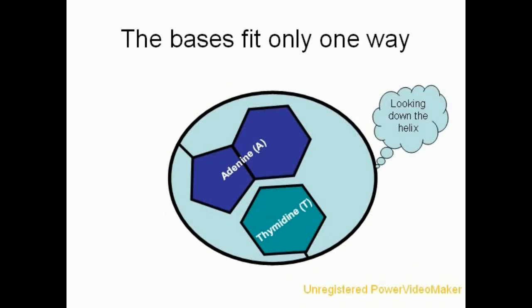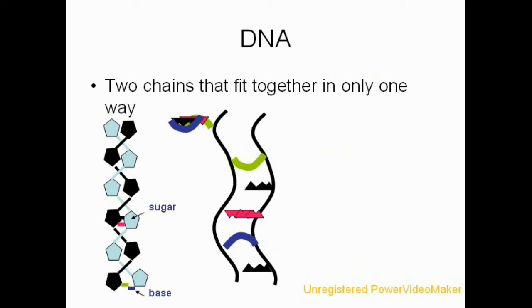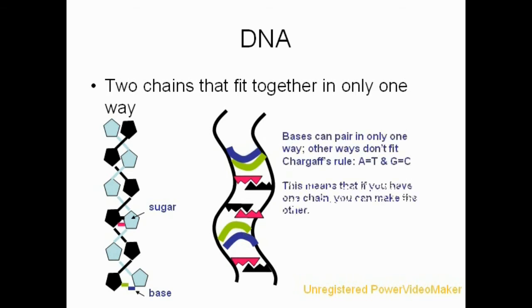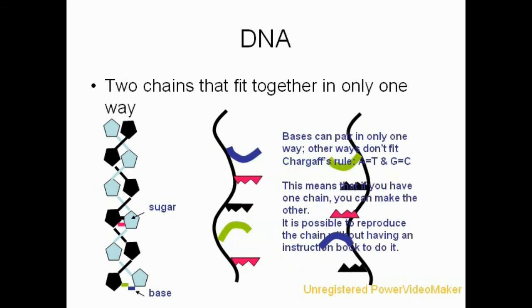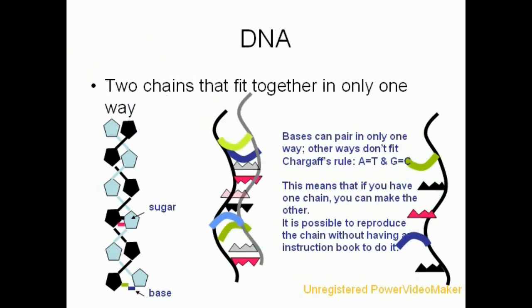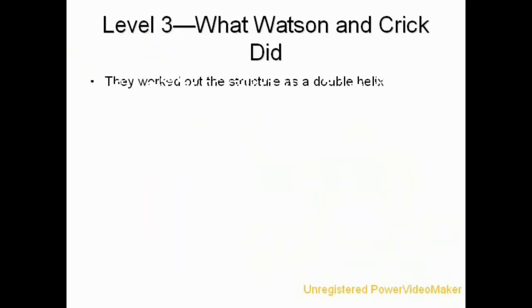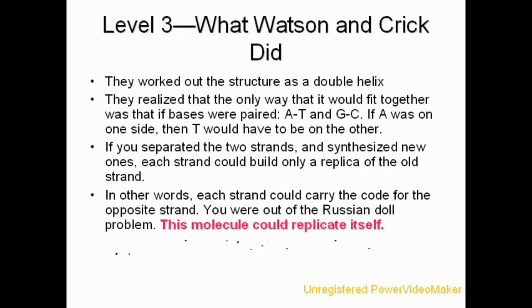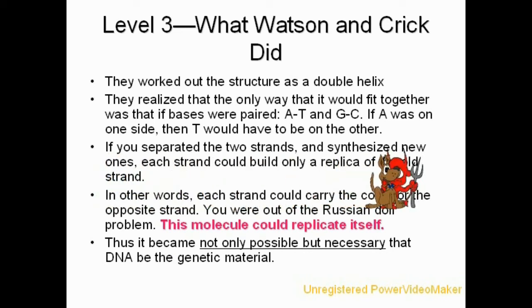If the bases fit together in only one way, then what it meant was that if you knew what one chain was, you would know what the other one was. And furthermore, if you separated the two chains, you could reassemble new chains based on the base sequence of the original chains. In other words, they could replicate each other, and you would not need an instruction book to do so. This molecule could replicate itself, and you were out of the Russian doll problem.